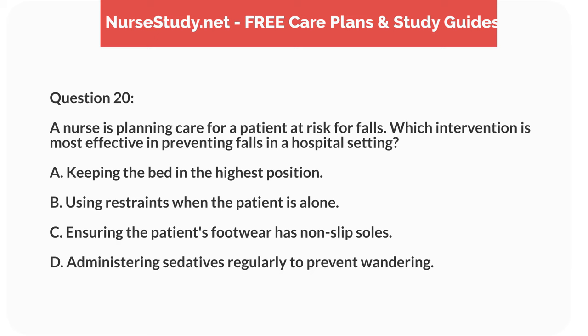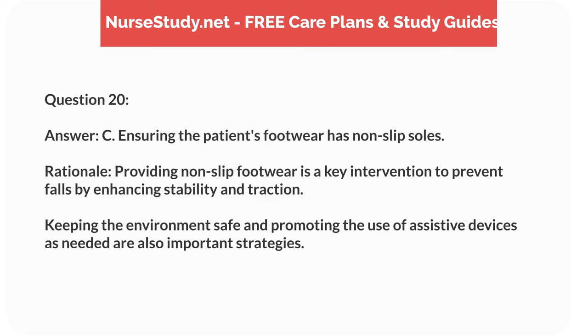Question 20. A nurse is planning care for a patient at risk for falls. Which intervention is most effective in preventing falls in a hospital setting? A. Keeping the bed in the highest position. B. Using restraints when the patient is alone. C. Ensuring the patient's footwear has non-slip soles. D. Administering sedatives regularly to prevent wandering. Answer: C. Ensuring the patient's footwear has non-slip soles. Rationale: Providing non-slip footwear is a key intervention to prevent falls by enhancing stability and traction. Keeping the environment safe and promoting the use of assistive devices as needed are also important strategies.